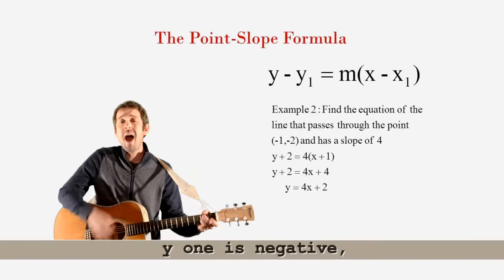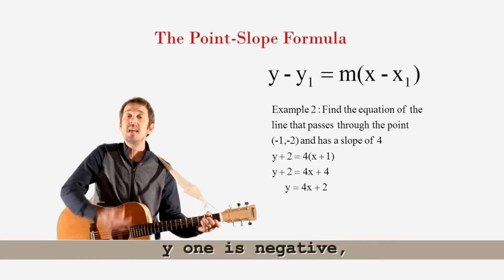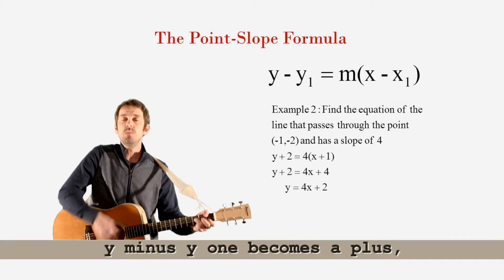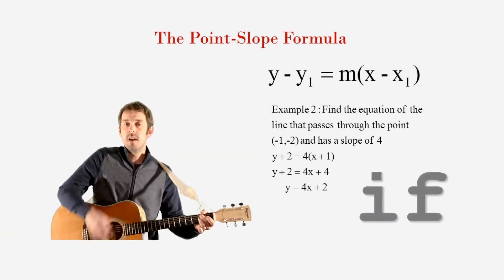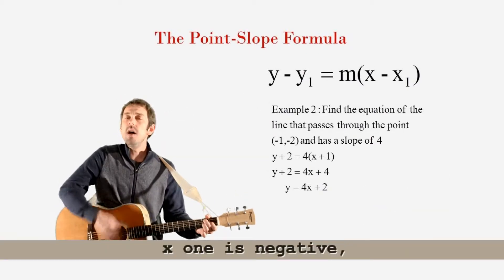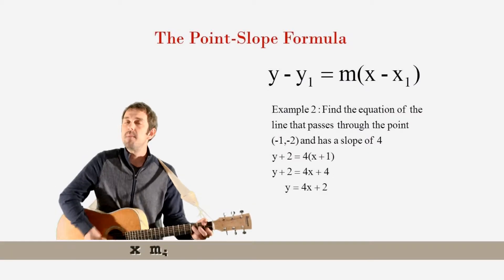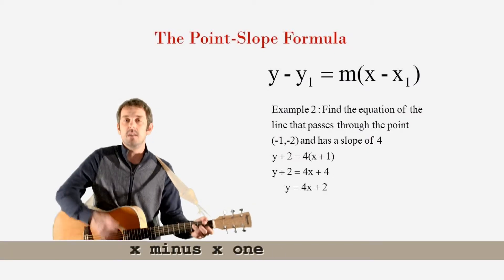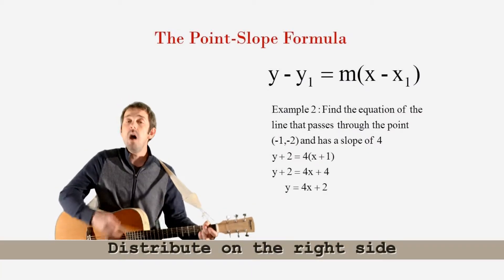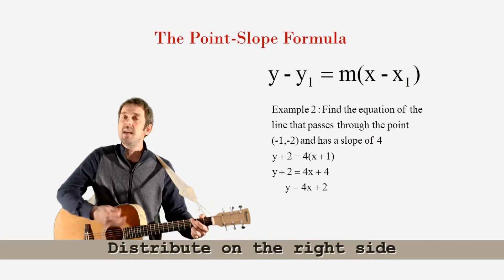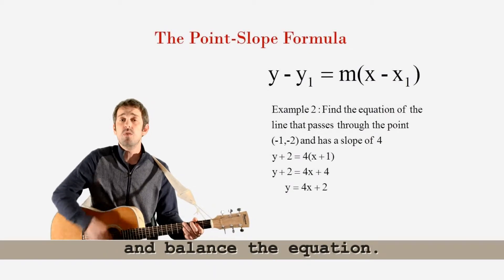And if y1 is negative, y minus y1 becomes a plus. And if x1 is negative, x minus x1 also becomes a plus — distribute on the right side to balance the equation.